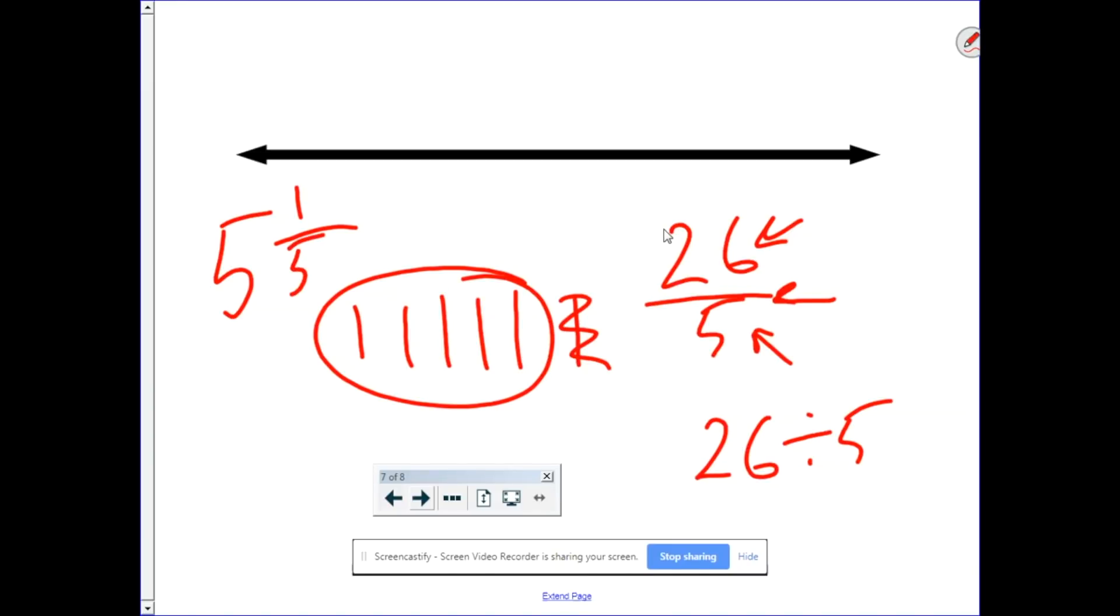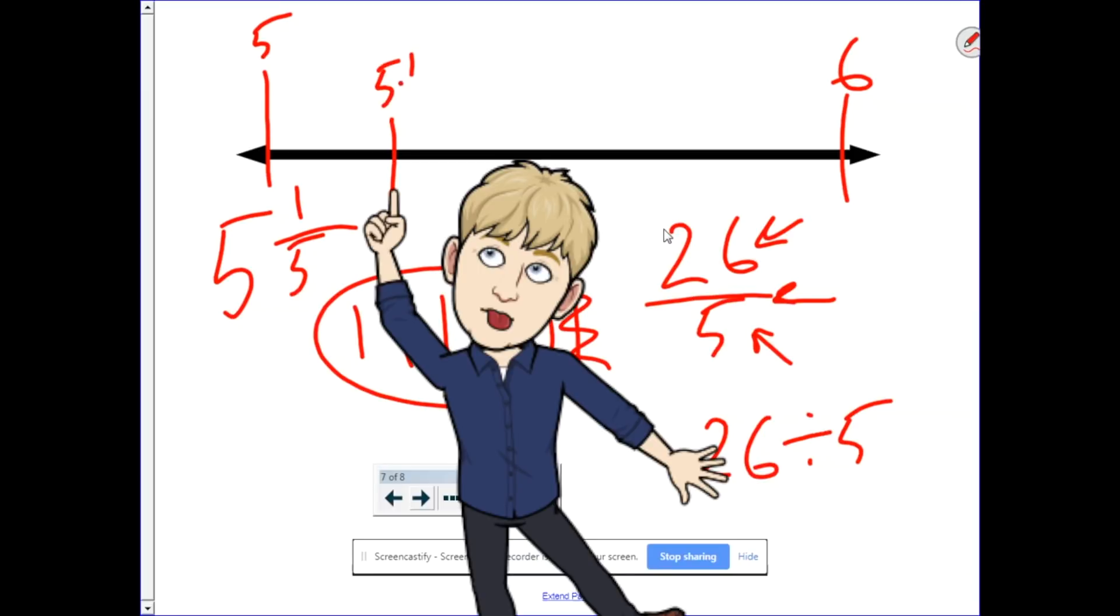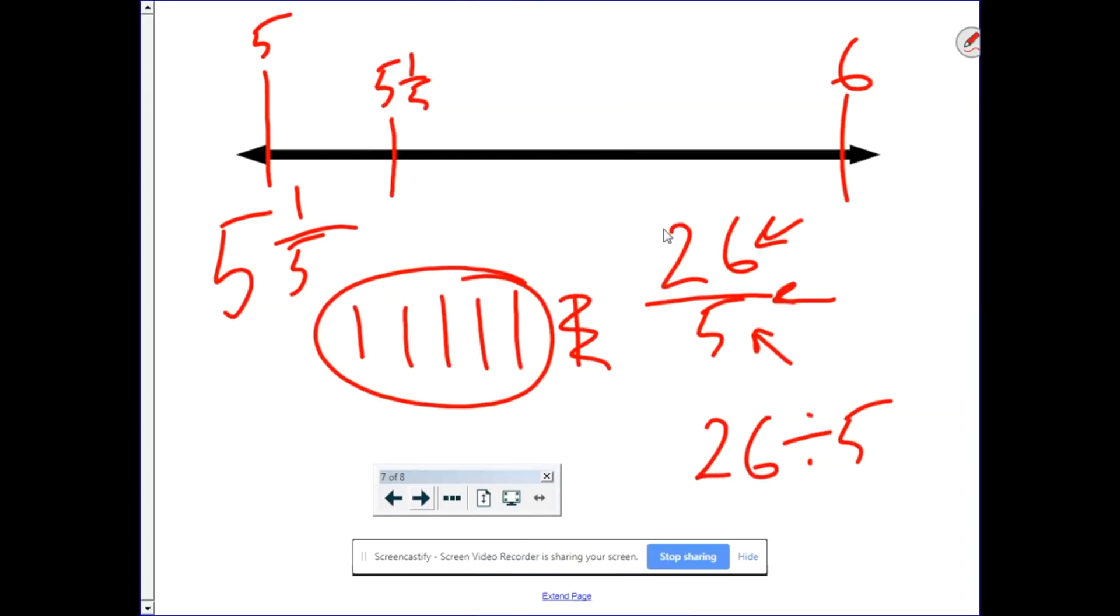Let's go back to our number line. We have five here, and we have six here. Five and one-fifth would be here. Five and one-fifth. So, twenty-six-fifths lies between five and six.